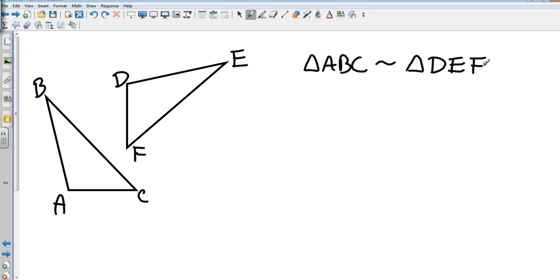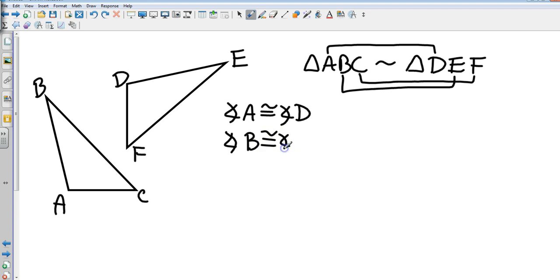I want you to list everything that's true about the sides and angles. Corresponding means A is going to correspond with D, B is going to correspond with E, and C is going to correspond with F. So that means angle A has to be congruent to angle D, angle B has to be congruent to angle E.